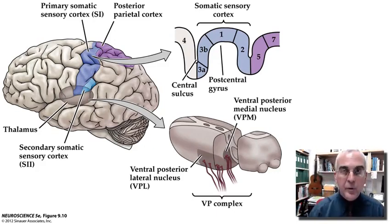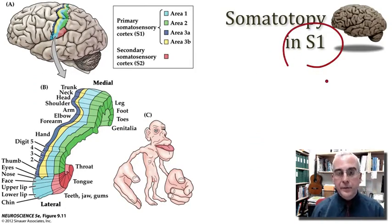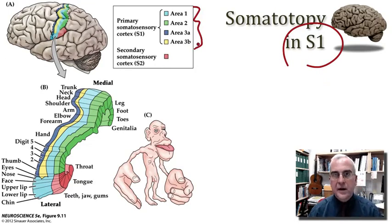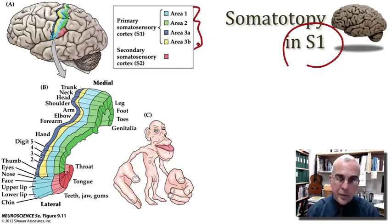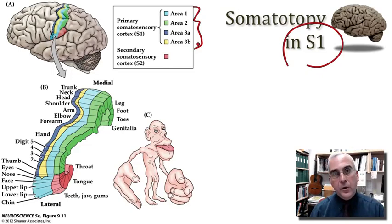So here we have an illustration from your text showing our primary somatic sensory cortex, which we call S1 for short. It's found in the postcentral gyrus and comprised of four cytoarchitectonically distinct regions that Corbinian Brodmann named over a hundred years ago: areas 2, 1, 3B, and 3A right at the depth of the central sulcus — from posterior to anterior. In each of these cortical areas, we have a complete representation of the opposite side of the body.